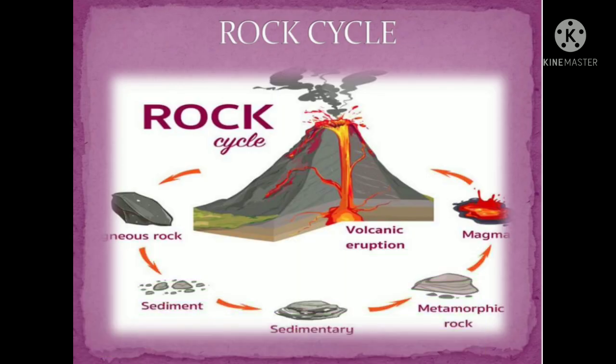Igneous rocks are the primary rocks formed first on the earth. In part 1 video, we saw how rocks form — igneous rocks, metamorphic rocks, and sedimentary rocks. The first and primary rocks are igneous rocks. Their formation takes place when there is an outflow of molten materials. When a volcanic mountain erupts and lava flows out of its crust, that lava forms into igneous rocks.